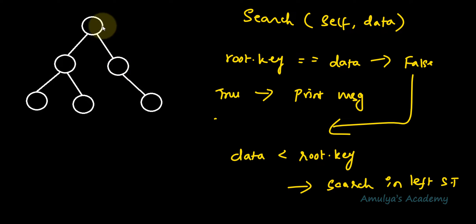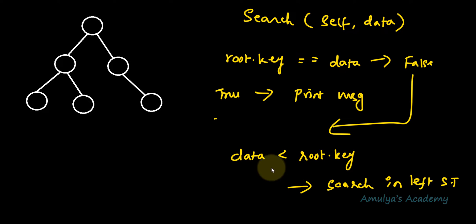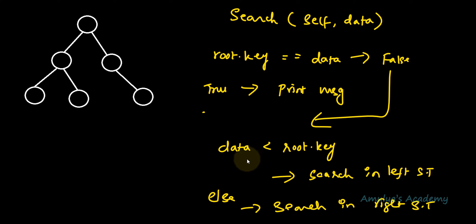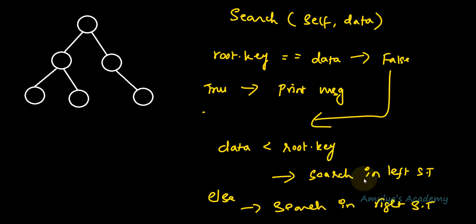Nodes with a key greater than the root key will be present in the right subtree. So we compare data with root.key: if data is less than root.key, search in the left subtree; else search in the right subtree. If data is not less than the root's key, that means data is greater, so we search in the right subtree. These are the steps to follow.